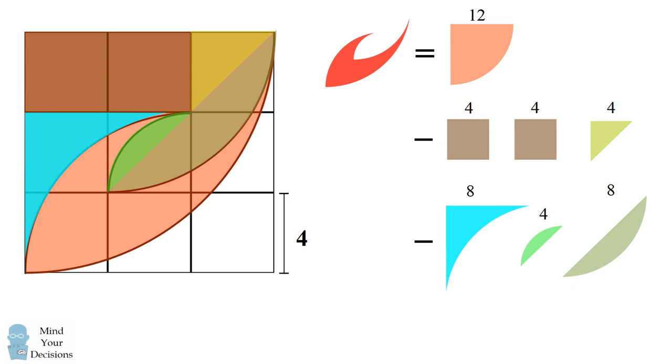So the area of a quarter circle is equal to π r² divided by 4. This quarter circle involves a radius of 12, so this has an area of 36π. The area of a square is equal to its side length squared. So these two squares have an area of 16 each.